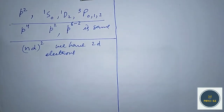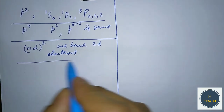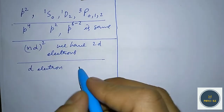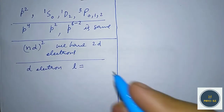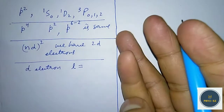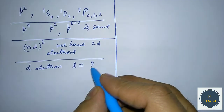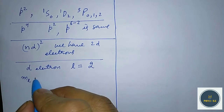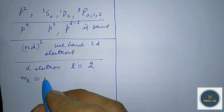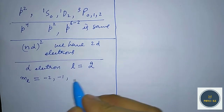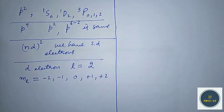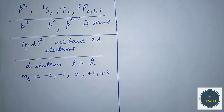For a d-electron, we know the value of l — that is the azimuthal quantum number — is 2. So the ml values, that is the magnetic quantum numbers, will be: −2, −1, 0, +1, and +2. These are the ml values. Now we will draw the Breit scheme for this.